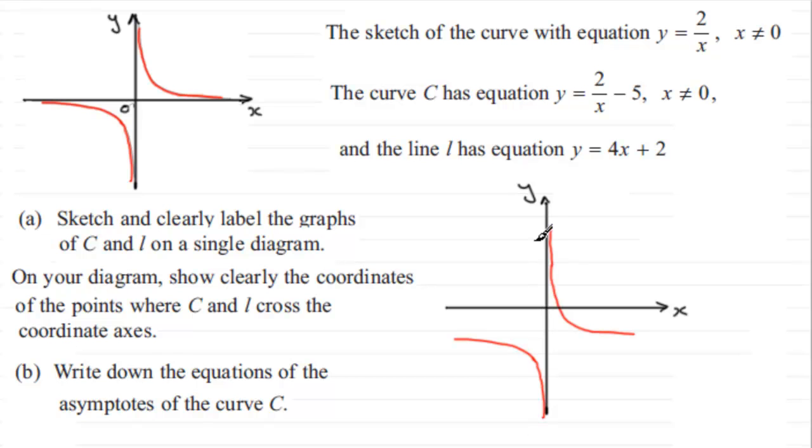We're going to be coming to that in part B. But we're asked to say where this curve crosses the axis. Well, it's going to only cross the x-axis as you can see at this point here. This is the curve C then. So how do we find out where this crosses the x-axis? All we've got to do is set y equal to 0. When y equals 0 in the equation of the curve C, we've got 0 equals 2 over x minus 5.